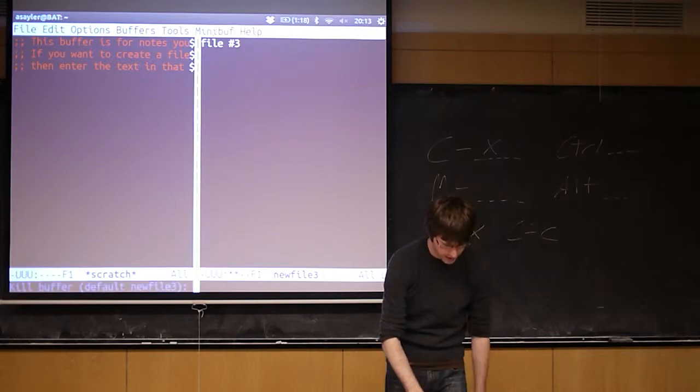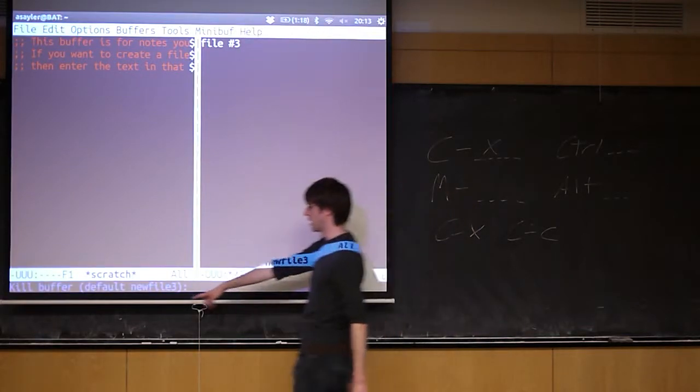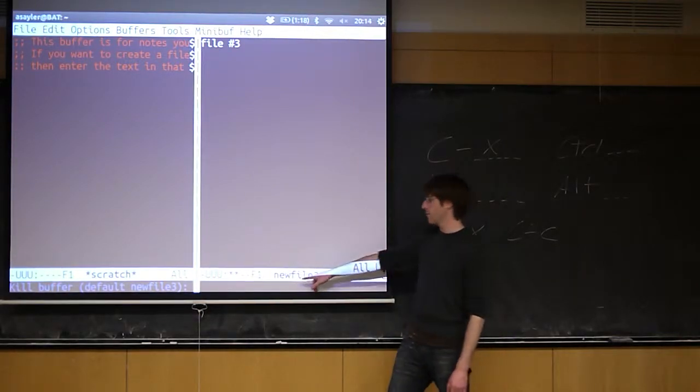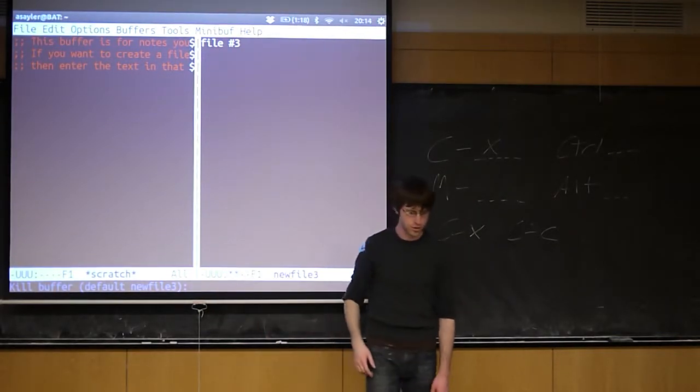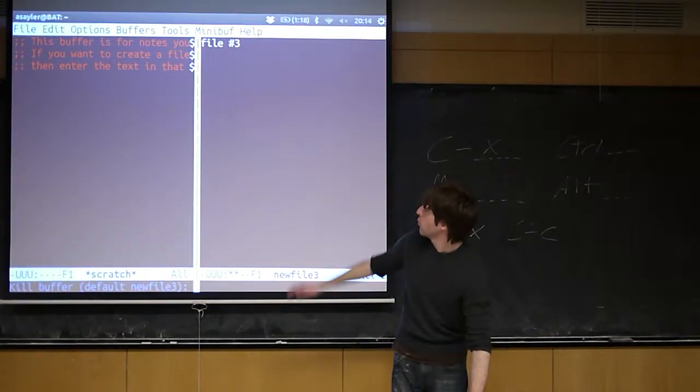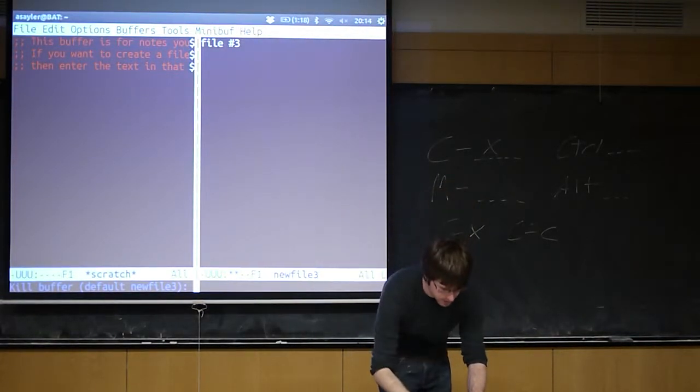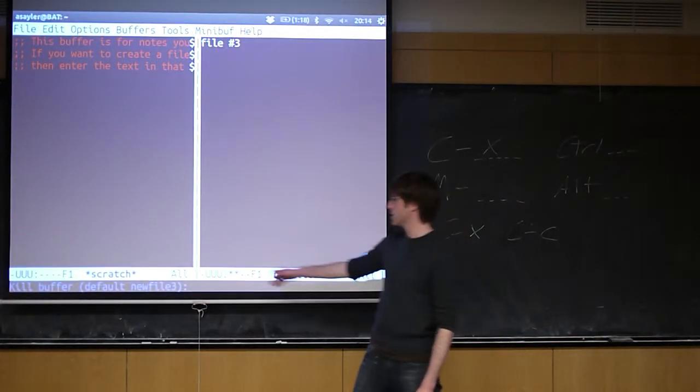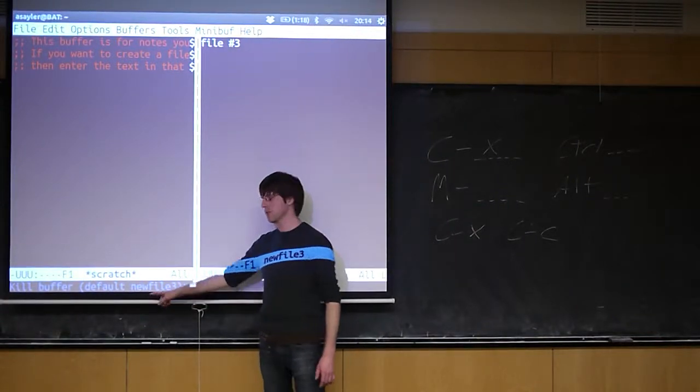You'll see down here it'll say kill buffer, default new file three. Same kind of deal. If this file hasn't been saved, let's see if it prompts me. So if I give it a Y... okay, so it's not a Y, it's just the name of the buffer to kill.